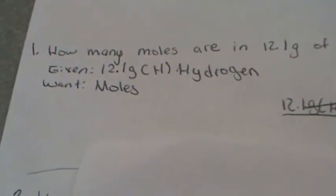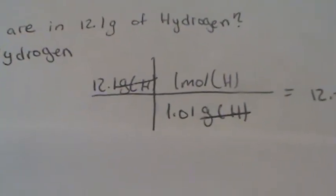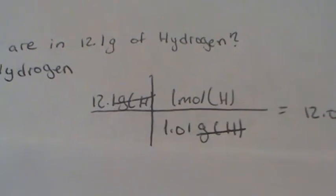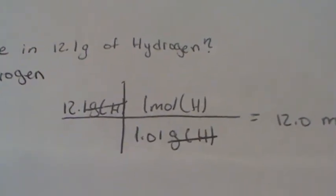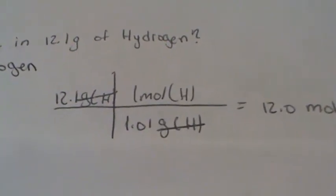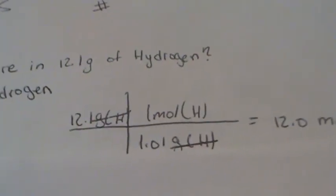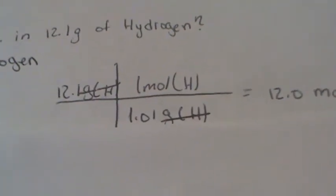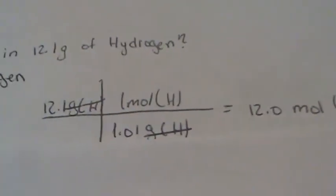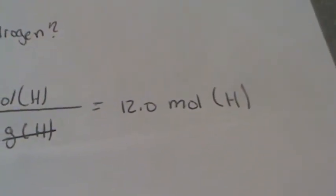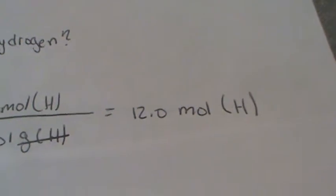At the bottom is our one, which is moles. We put 1.01 grams and hydrogen. One hydrogen has an atomic mass of 1.01 grams. We multiply across and divide at the bottom. And our answer will be 12.0 moles of hydrogen.